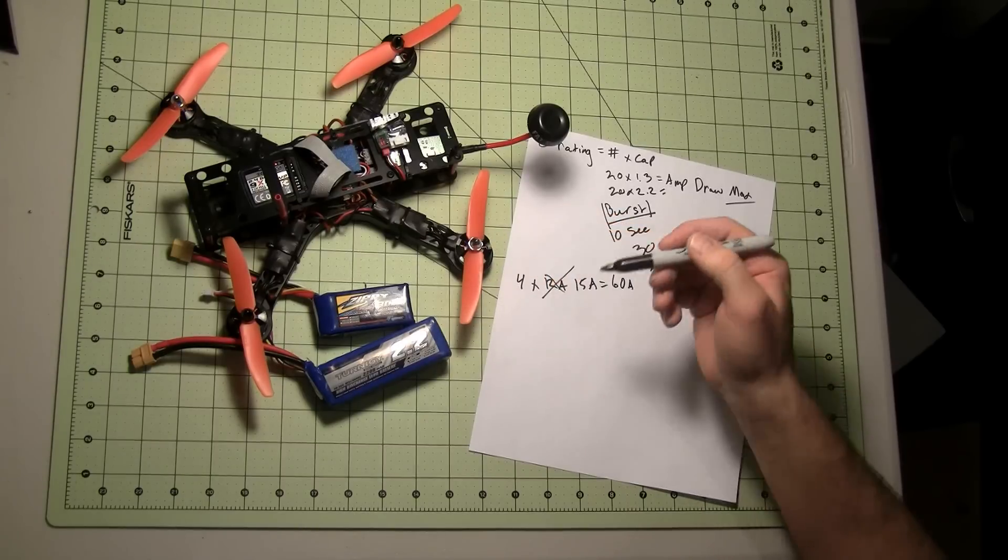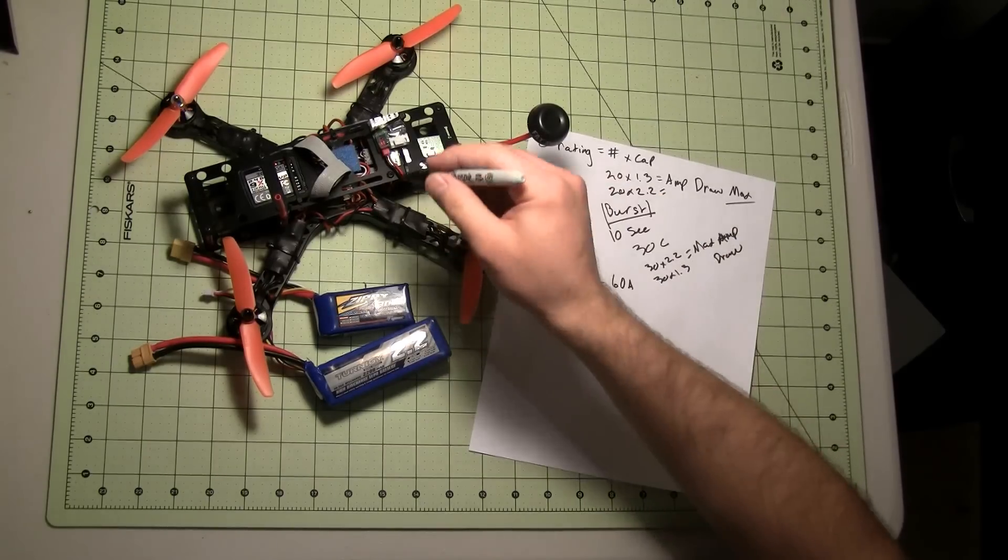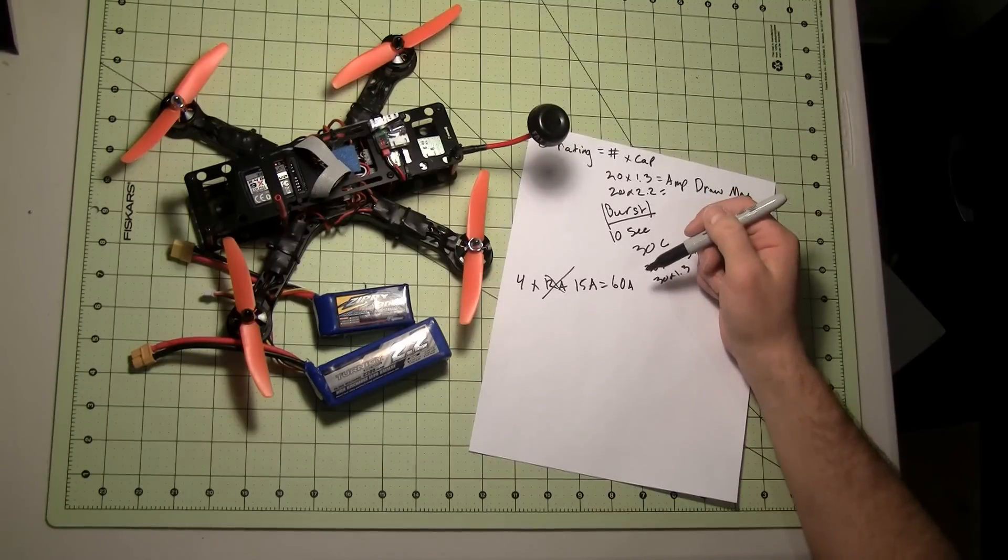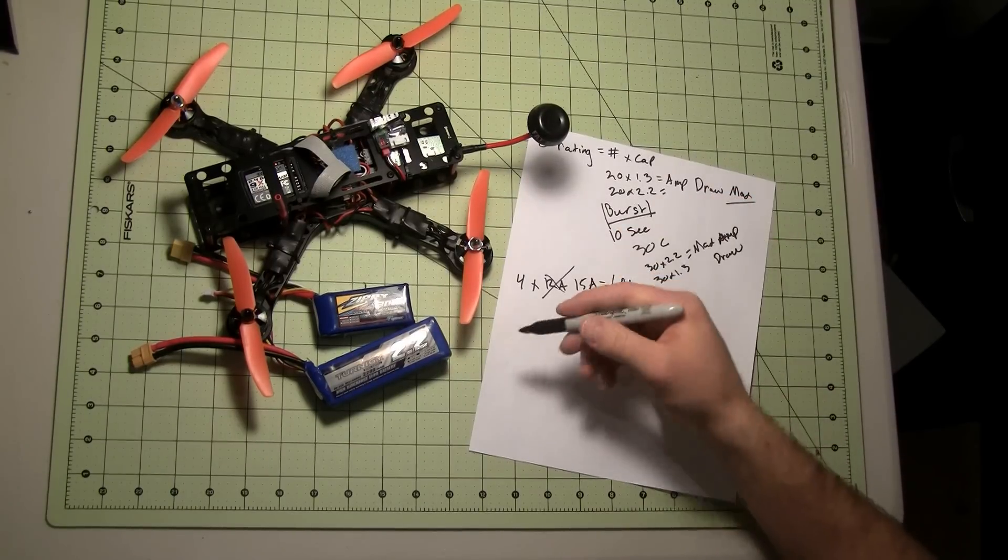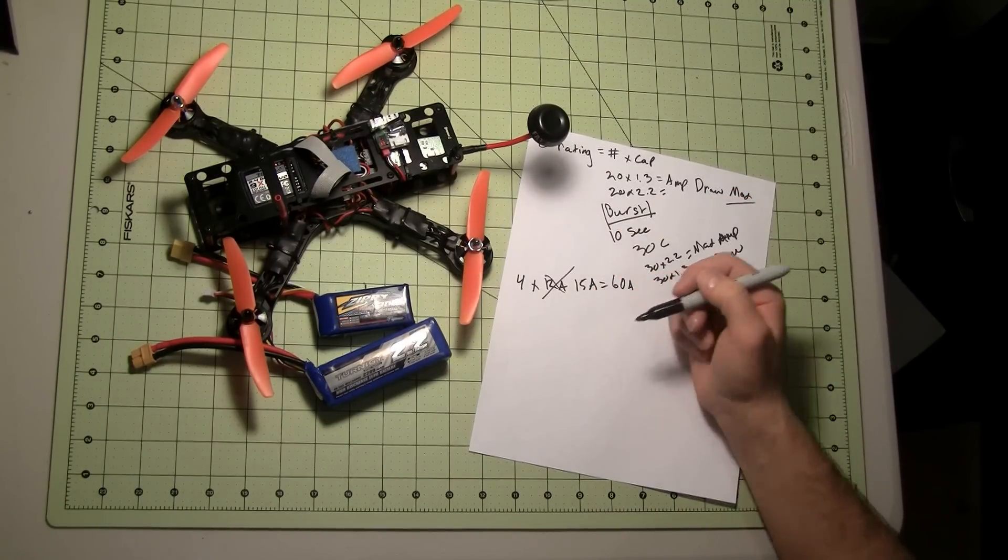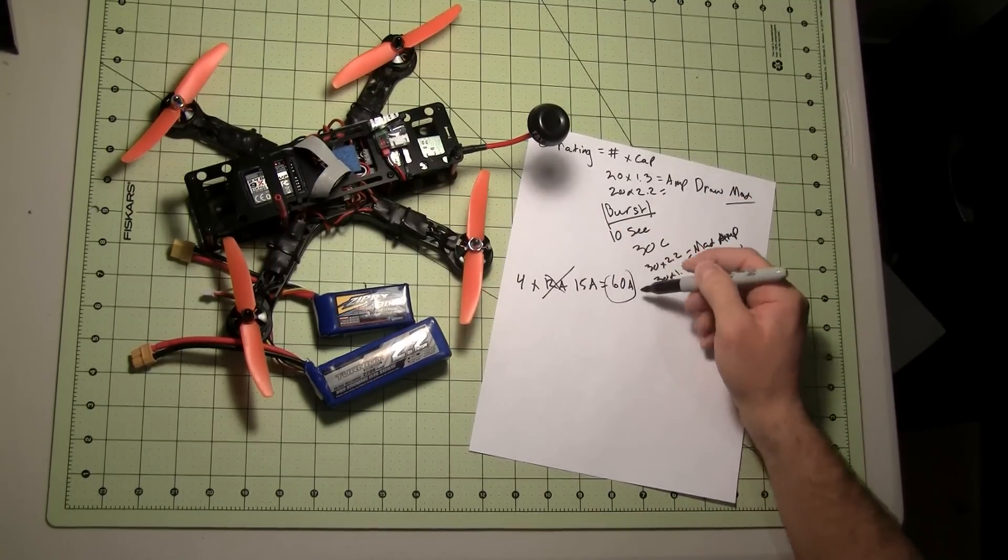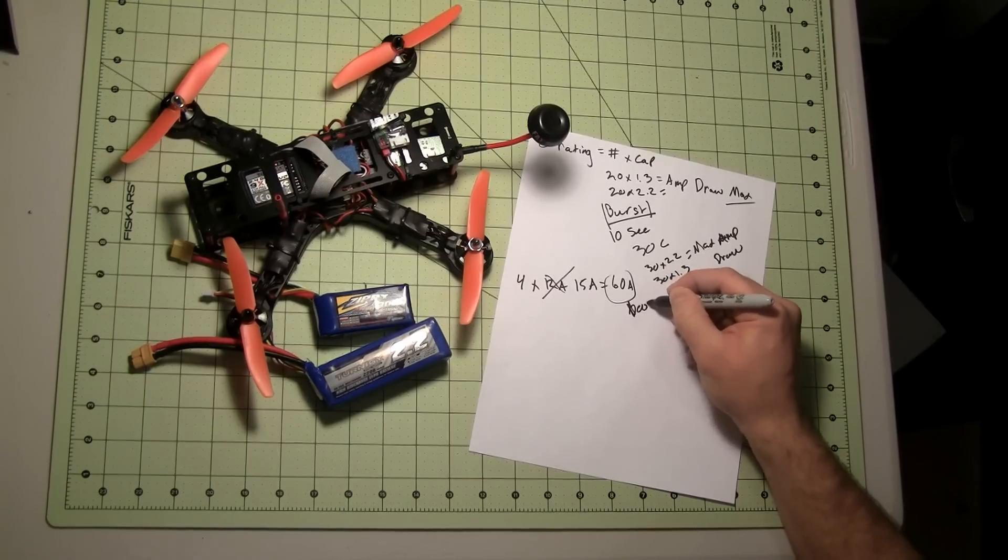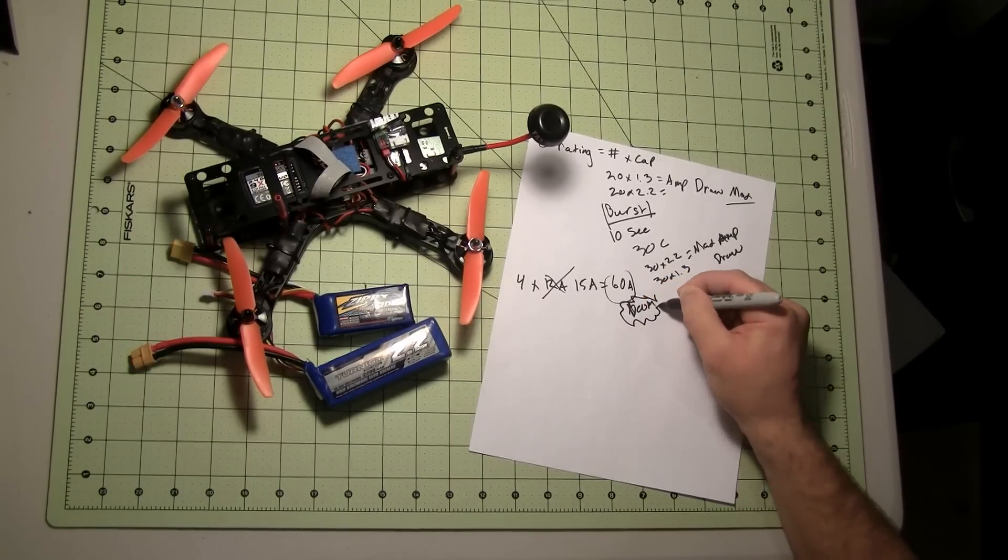Anything past 60 amps for longer than 10 seconds, my ESCs will explode. It doesn't matter how big the C rating is, it's going to explode right here. Boom. That's bad.